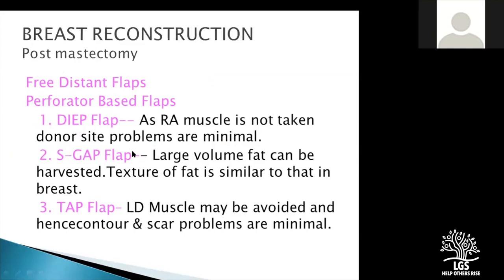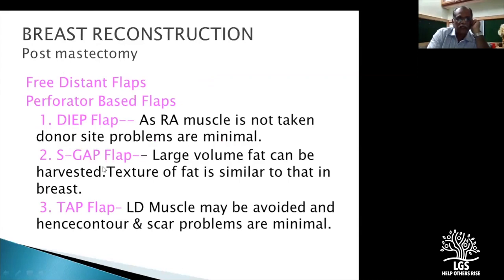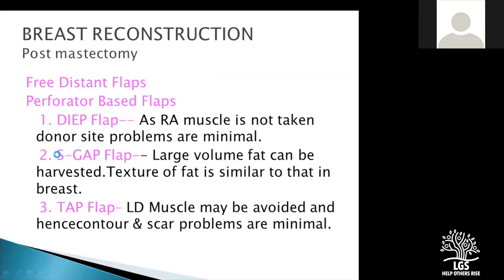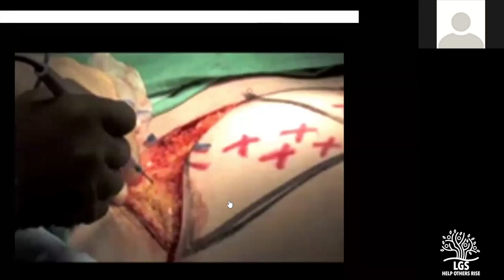DIEP is the deep inferior epigastric perforator — one needs to look at it in that way also. There are other flaps which are rarely used, but the SGAP flap and LGAP flap are something coming up — they are taken from the gluteal region.